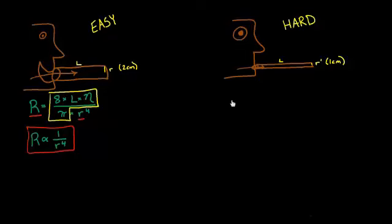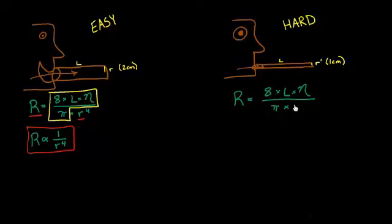Now let's look at the other side. Over here we have resistance equals 8 times the length times viscosity divided by π, so far it should look the same. Here's the big change: instead of r, I'm going to say r prime to the fourth power. What's the relationship? We said if r is 2 centimeters, r prime is 1 centimeter. That means r prime equals r divided by 2. I made up these numbers, so that relationship is just for this example.